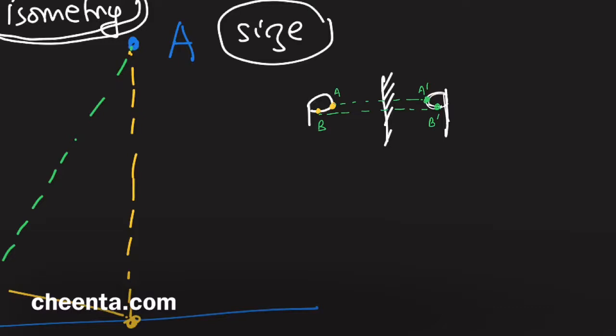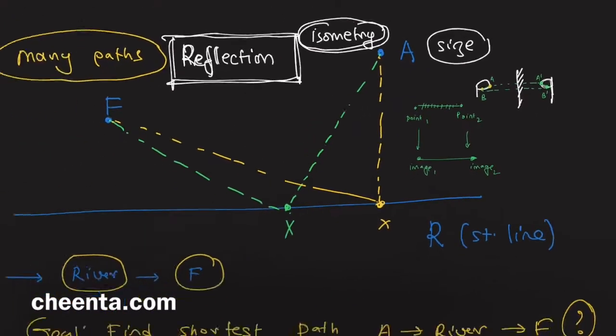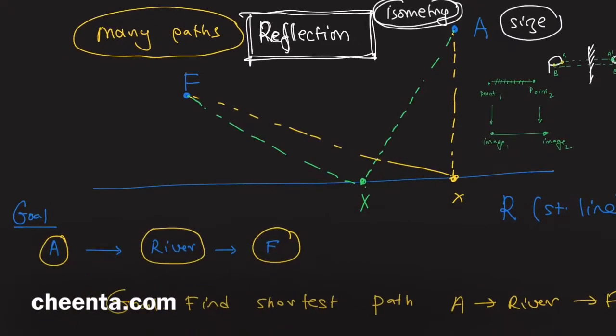Then the distance between A and B and distance between A prime and B prime will be same. So isometry is a geometric transformation such that the distance between point 1 and point 2 and their images, whatever the initial distance was, the distance between image 1 and image 2 will be the same.